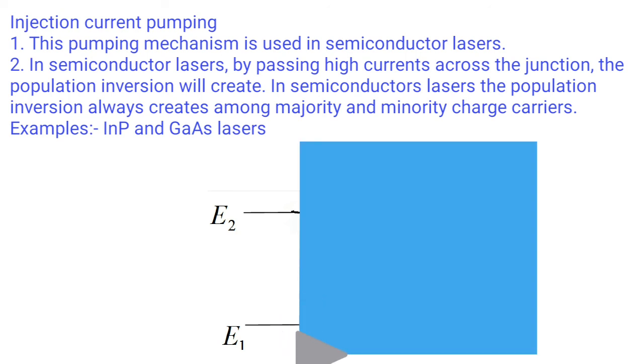In semiconductor lasers, by passing high currents across the junction, population inversion is created. In semiconductor lasers, the population inversion always occurs among majority and minority charge carriers. Examples: InP and GaAs lasers.